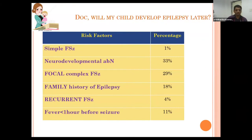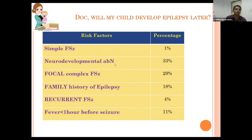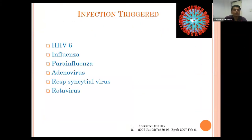In terms of epilepsy risk in percentage: for first episode of simple febrile seizure, risk of developing epilepsy is 1 percent. For recurrent febrile seizure, the risk is 4 percent. For children with neurodevelopmental abnormality, the risk is 33 percent, as their neurogenic threshold is lower. For complex febrile seizure with family history of epilepsy, the risk is as high as 80 percent.